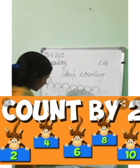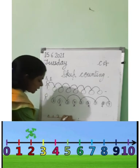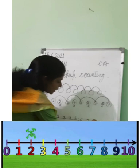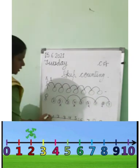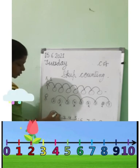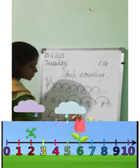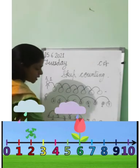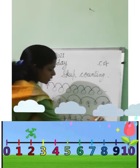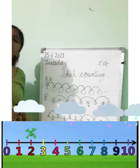As you can see on the number line. Zero, one, two, three, four, five, six, seven, eight, nine, ten. Zero se jump karenge, one ko cross karke, two, then three ko cross, four, five ko cross, six, seven ko skip karenge, eight, then nine ko skip karenge, ten. These are skip counting by twos.